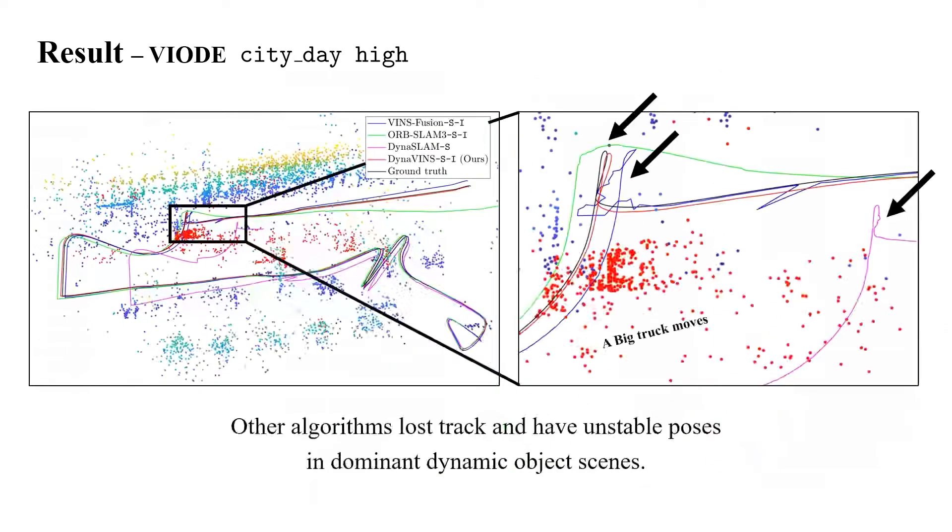These are the trajectories of algorithms in city day high sequence. When a big truck which is a dominant dynamic object is moving, other algorithms lost track and thus trigger unstable pose estimations due to the features from it.